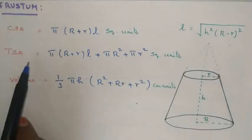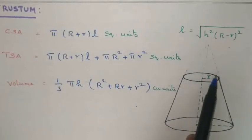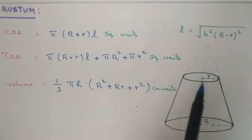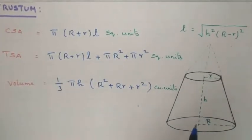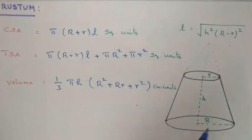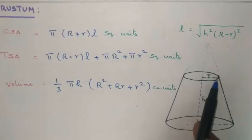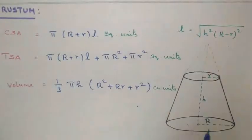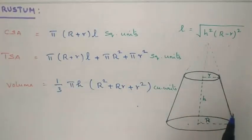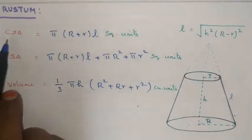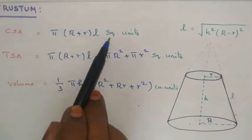Next is the Frustum. A frustum is the shape obtained when the top of a cone is cut off. It has two circular ends — a larger circle with radius R and a smaller circle with radius r. The CSA of a frustum is π(R + r)l, where l is the slant height.